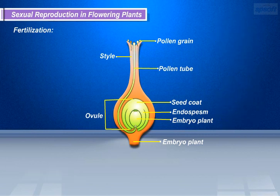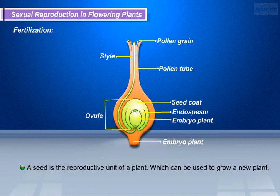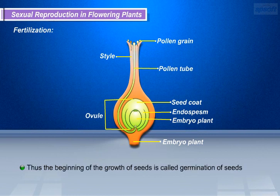A seed is the reproductive unit of a plant and can be used to grow a new plant. The beginning of the growth of seeds is called germination of seeds.